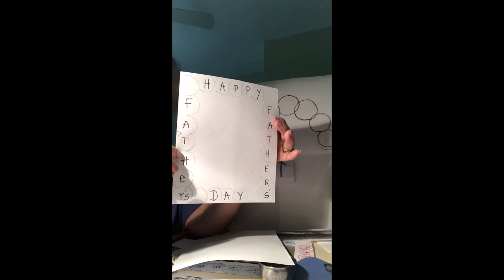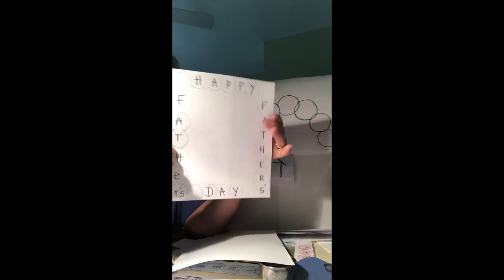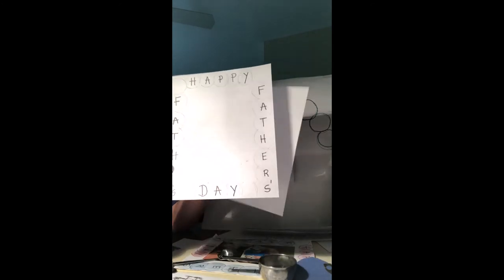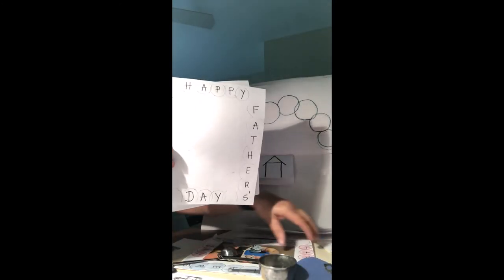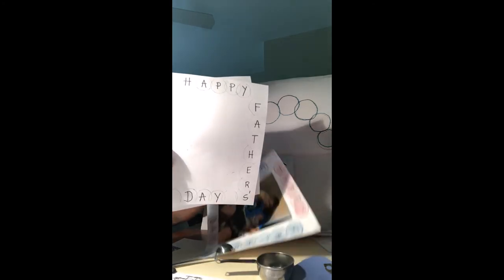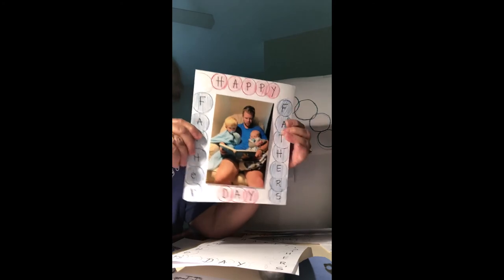Happy at the top, father's on the side, and then day at the bottom. I wrote these in the circles and then I colored them. You can do whatever you'd like. You might want to draw a picture or maybe find a picture of somebody, but this is what I created for my son. I colored the circles.